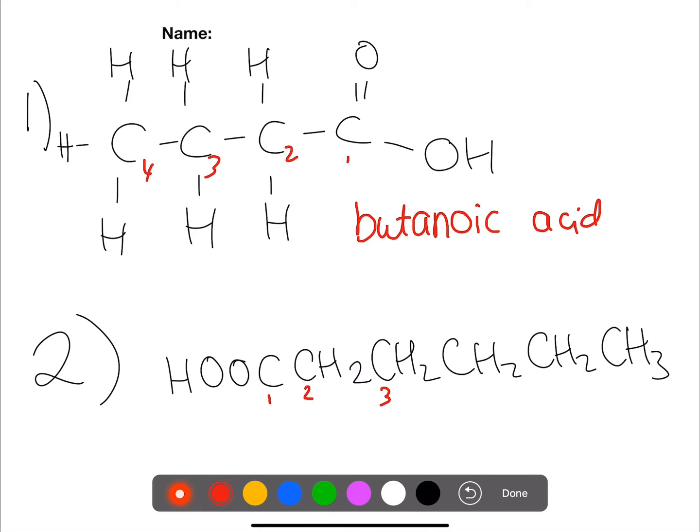Here we have one, two, three, four, five, six. So six is always hex. We've got single bonds. So hexane and oic acid for the functional group.